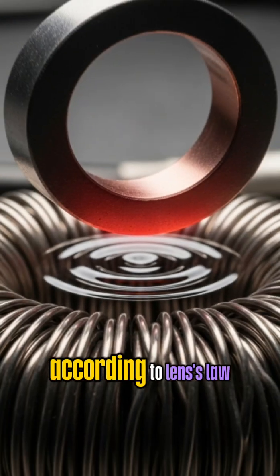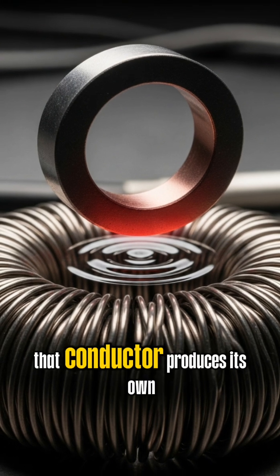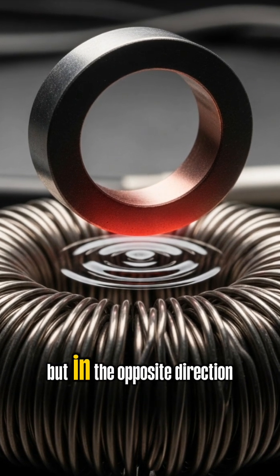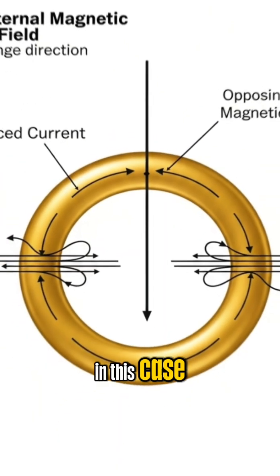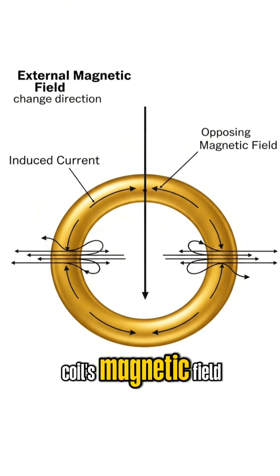Why? According to Lenz's law, any time a magnetic flux changes through a conductor, that conductor produces its own current, but in the opposite direction. In this case, the metal ring generates its own magnetic field that pushes away from the coil's magnetic field.